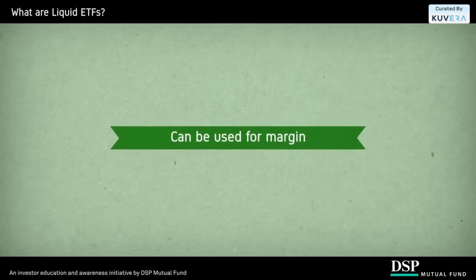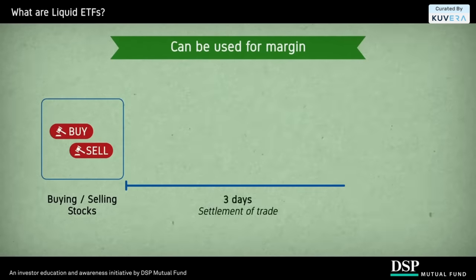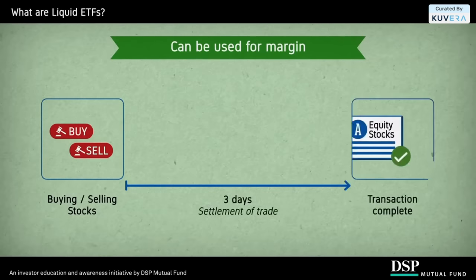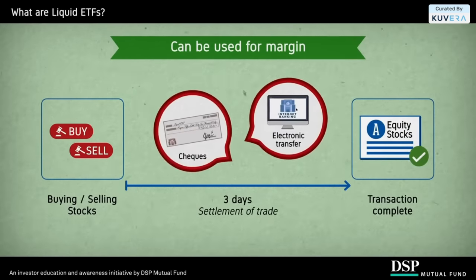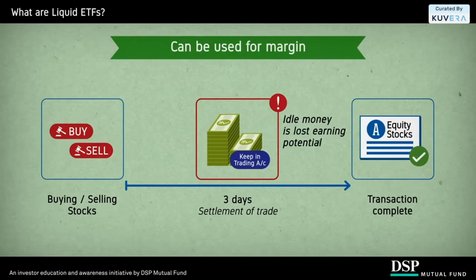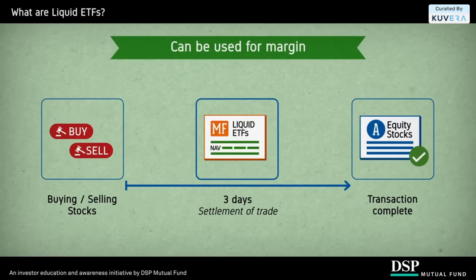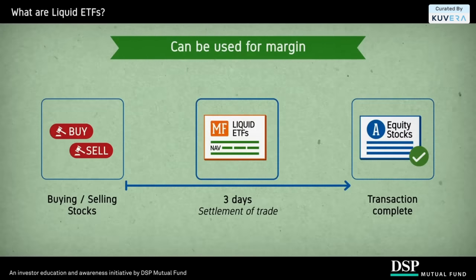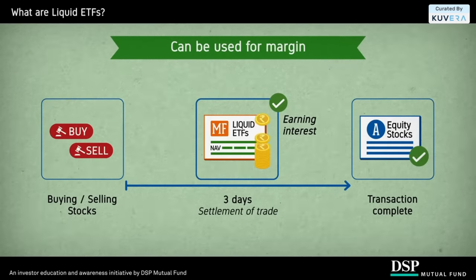Fourth, liquid ETFs can be used for margin. While buying or selling stocks, it takes three days to complete a trade. To avoid the inconvenience of issuing checks or making electronic transactions each time, some traders keep margin with their brokers. However, this margin money does not earn any returns. You could purchase liquid ETF units worth the margin you want to maintain and may earn returns until it is used to purchase stocks.